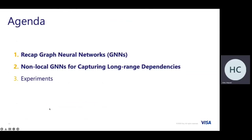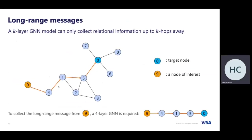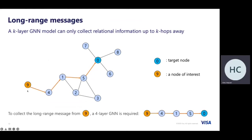In the second part, we introduce our proposed framework called non-local GNN to capture long-range dependencies. Most GNN models only aggregate information from the local neighborhood, so a k-layer GNN can only collect relationship information up to k hops away. For example, to collect information from node 9, we need to use a four-layer GNN.